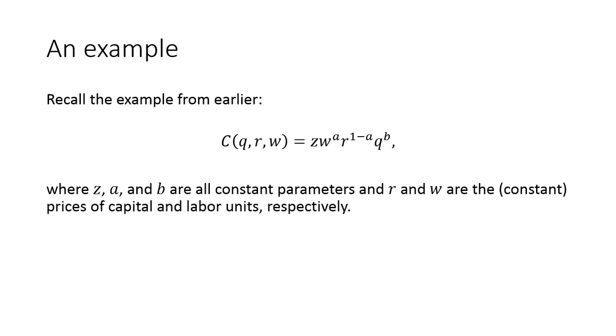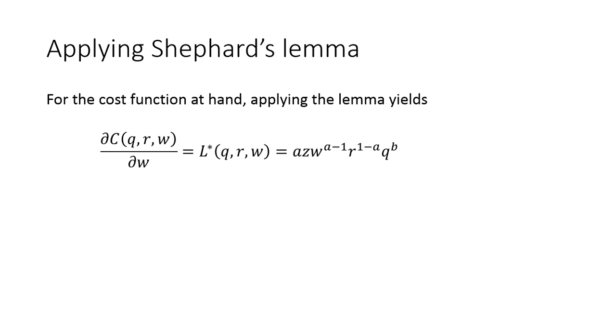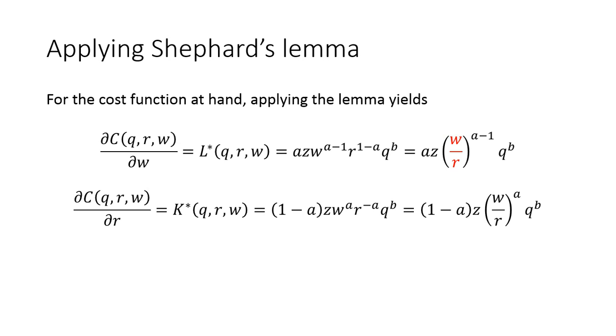Let's just revisit this example. So here is our cost function before. I'm going to take the derivatives with respect to r and w to recover the input demands L and K. So here is my partial derivative of the cost function with respect to w, and I'm going to just simplify this a little bit so that we can actually get the price ratio isolated by itself here, so it's a little obvious later on when we need it.